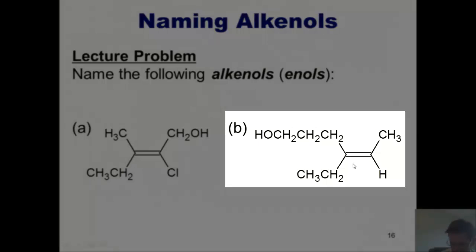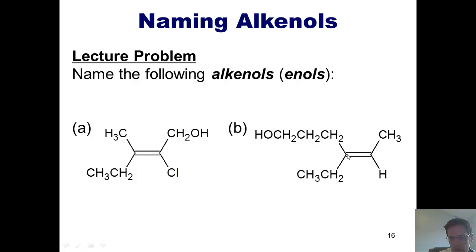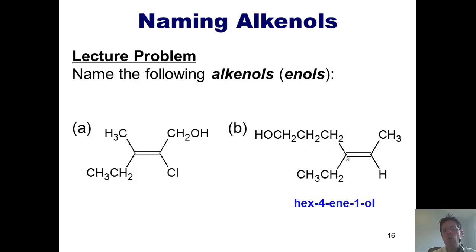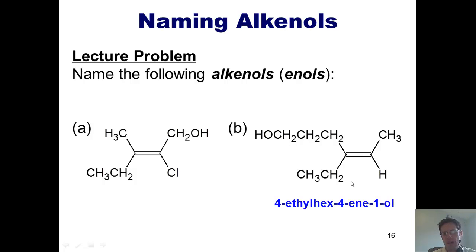For this second example, I could number right-to-left giving me a smaller number for the double bond, but the alcohol has higher priority, so I number left-to-right: 1, 2, 3, 4, 5, 6 — six carbons, making it a hexenol. The alcohol is at carbon 1 and the double bond occurs at carbon 4, so I call it hex-4-ene-1-ol. With an ethyl group coming off of carbon 4, the full name is 4-ethyl-hex-4-ene-1-ol.